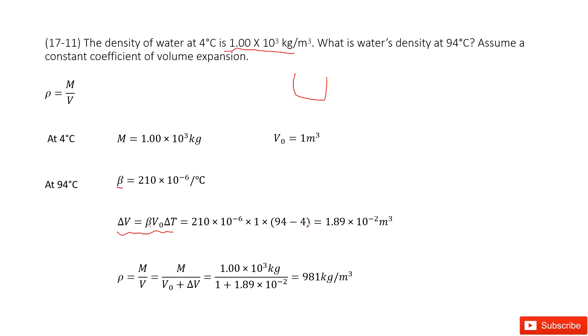So final temperature minus initial temperature, we input all the known quantities and get the answer there. So in this case, you can see when we increase the temperature, the volume increases by this amount.